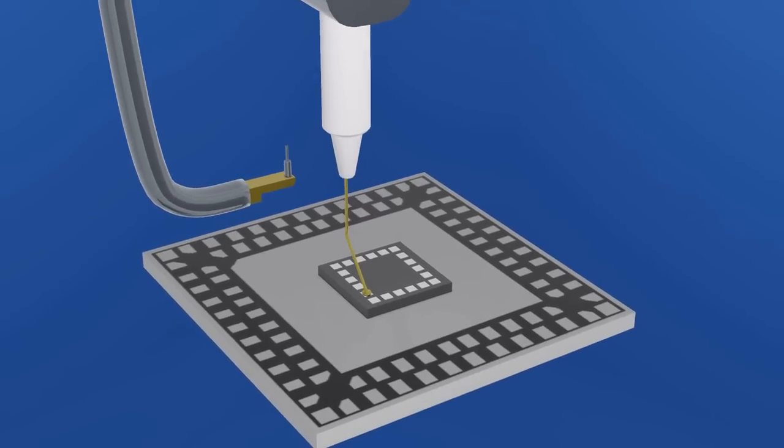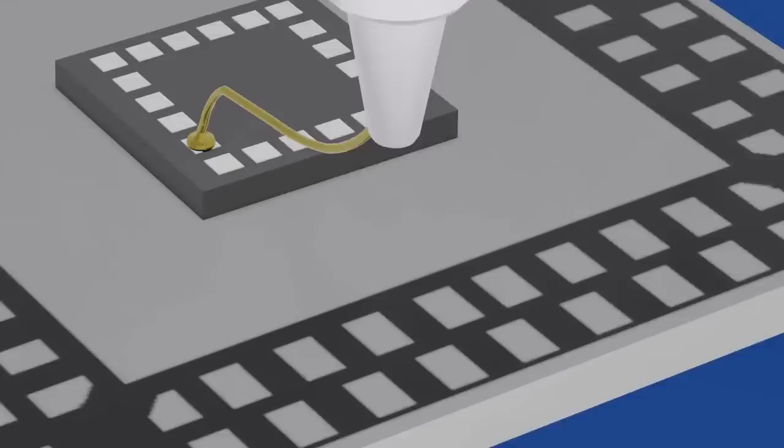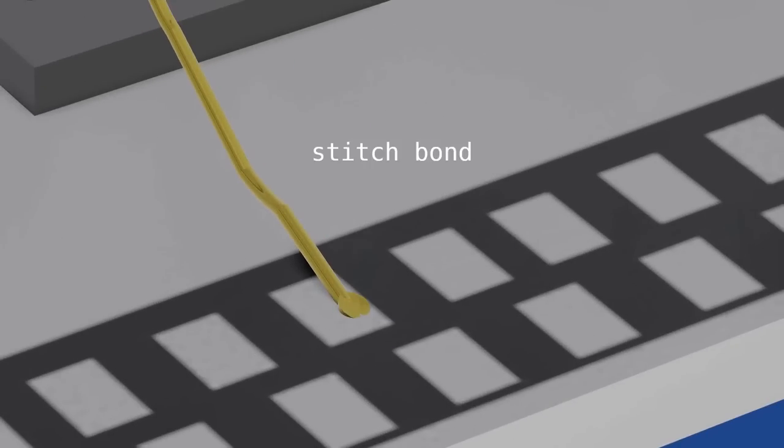The other end of the wire has a different type of bond. Instead of a ball bond, there is a stitch bond. The bonding tool heats and presses the gold wire into the package post, flattening the wire and creating a stitch bond.